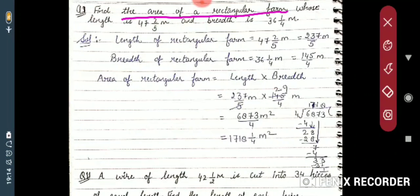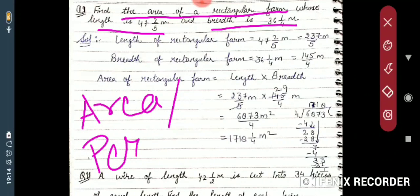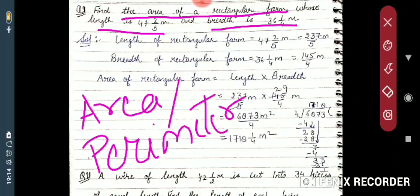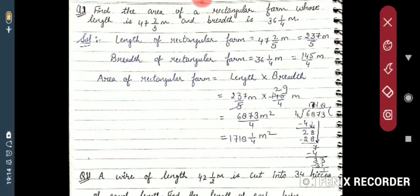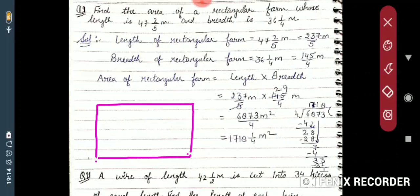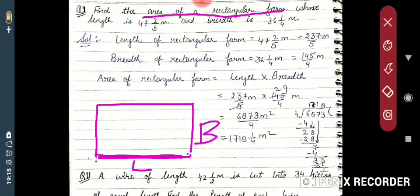...area of the rectangular farm whose length is 47 and 2/5 meters and the breadth is 36 and 1/4 meters. As you know, area and perimeter — two things are there. Both involve length as well as breadth. In this question, a rectangular farm is there and you have to find the area where the length and breadth are given.